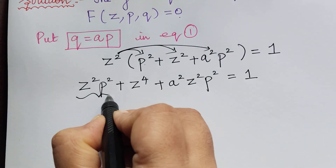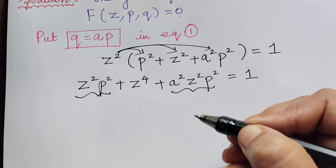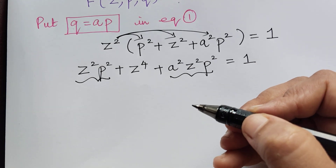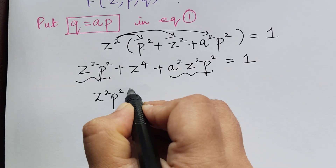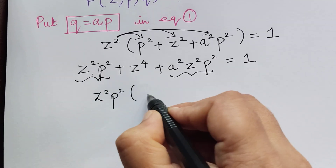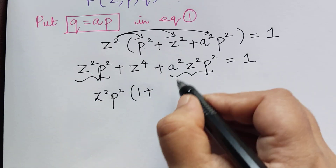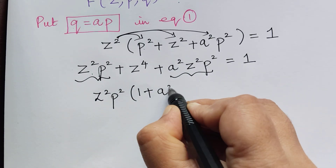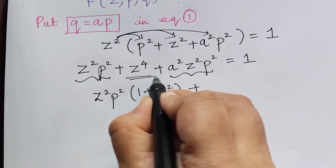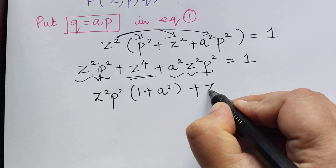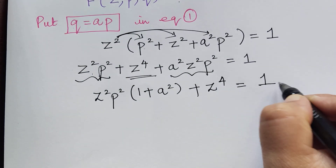We shall now multiply z squared to each of the terms. So we get z squared p squared, plus z to the power 4, plus a squared z squared p squared, is equal to 1. In these two terms, z squared p squared can be taken common, giving z squared p squared multiplied with 1 plus a squared, plus z to the power 4, is equal to 1.